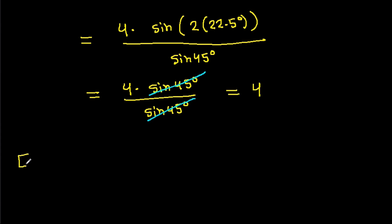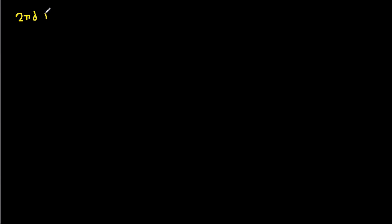So, area of triangle ABC equals 4. Now for the second method.